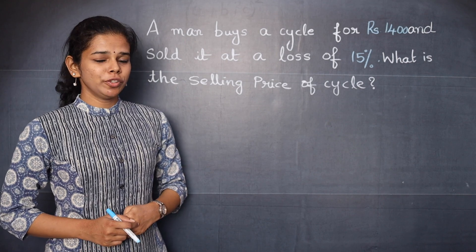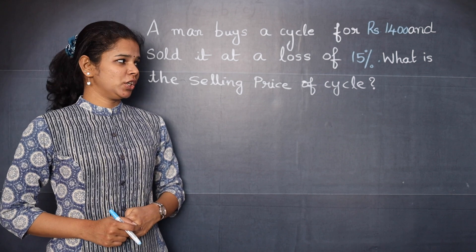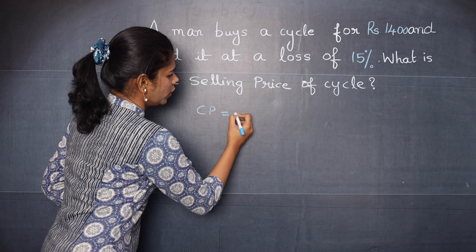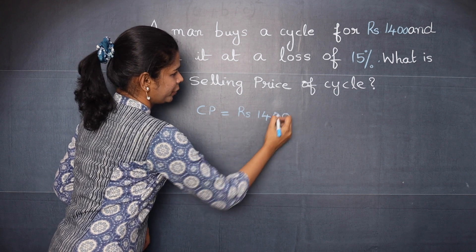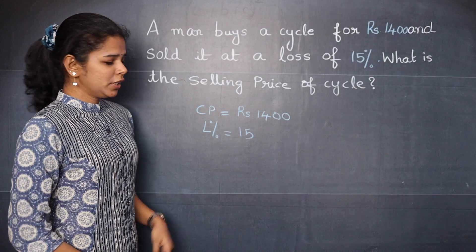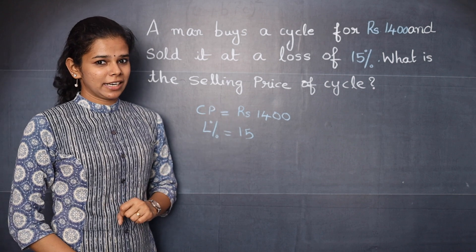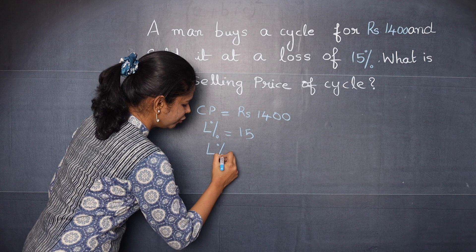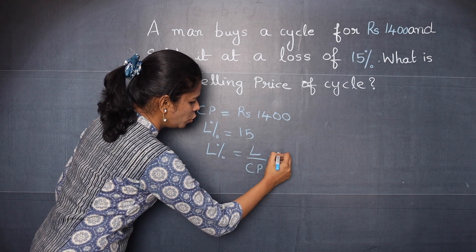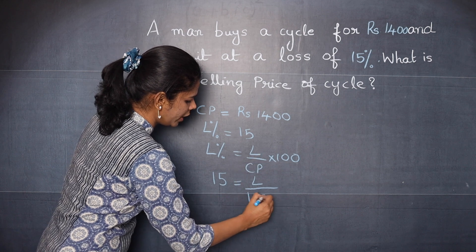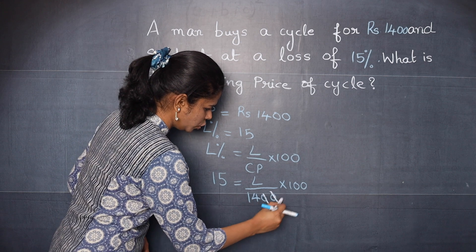There is another name for profit percentage — it is gain percentage. Now let's move on to a question: a man buys a cycle for 1400 rupees and sells it at a loss of 15%. What is the selling price of the cycle? Here CP is equal to 1400 rupees and the loss percentage is 15%. You need to find the selling price, so first let's find the actual loss using the formula: loss percentage equals loss divided by CP, multiplied by 100.